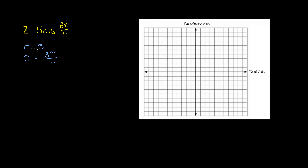Then we need to identify the a's and the b's. In our case, a is going to equal 5 cosine — because 'c' is for cosine — of 3π/4, and b is going to equal 5 sine of 3π/4. The next step is to identify cosine of 3π/4, which goes back to the unit circle.